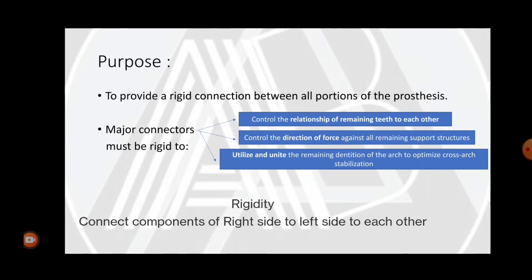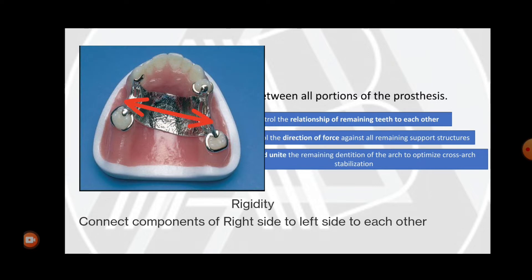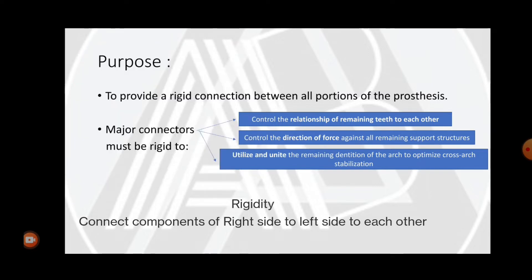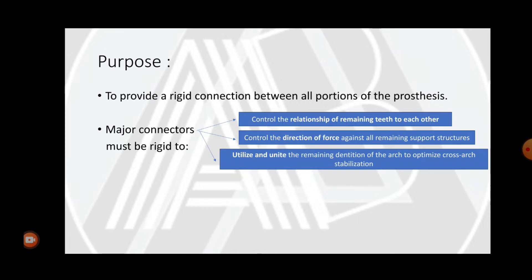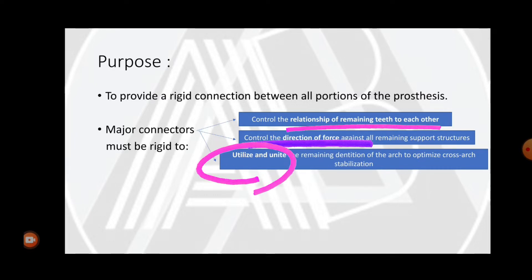The major connector must be rigid to control the relationship of the remaining teeth to each other. It also needs to be rigid to control the direction of forces against all remaining support structures, and it unites the remaining dentition of the arch so that we can get cross-arch stabilization.